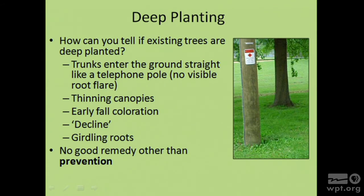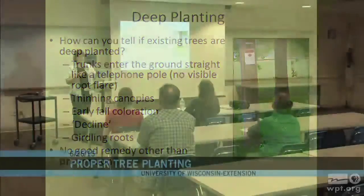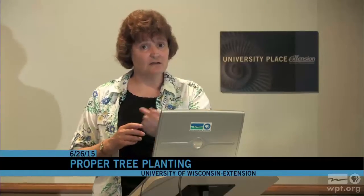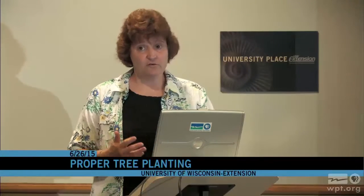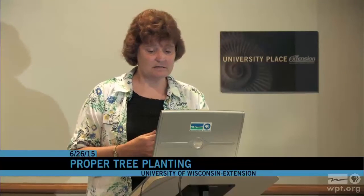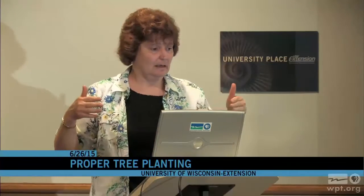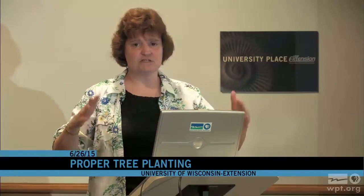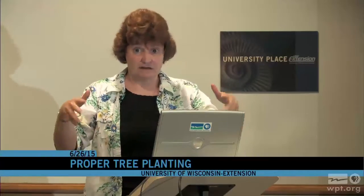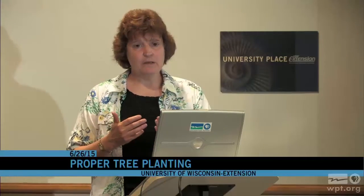Deep planting causes the roots and root flare to struggle for oxygen, nutrients, and air, so canopies start to thin over time—though it may not happen right away; it could take five or ten years. You'll start to see early fall coloration, leaves that are smaller than normal, and branches that don't grow much. You might see dieback, and often you can see girdling roots around the base. Unfortunately, there's not really a good remedy. Arborists can try using an air knife—compressed air forced into the ground to excavate around the trunk—but if the girdling root is large and long-established, it may have already done too much damage.